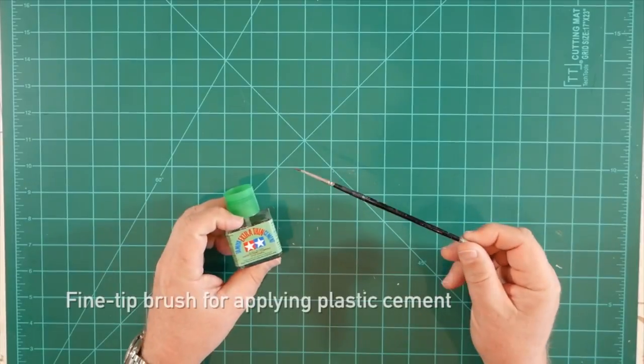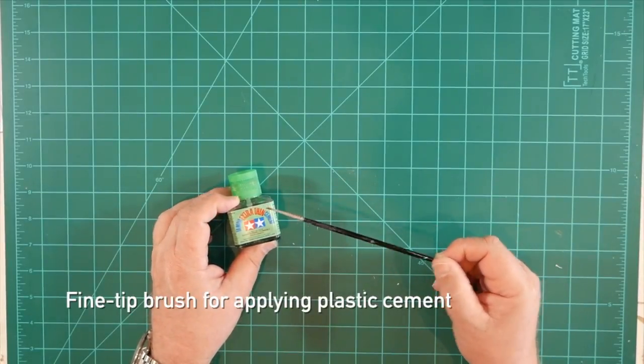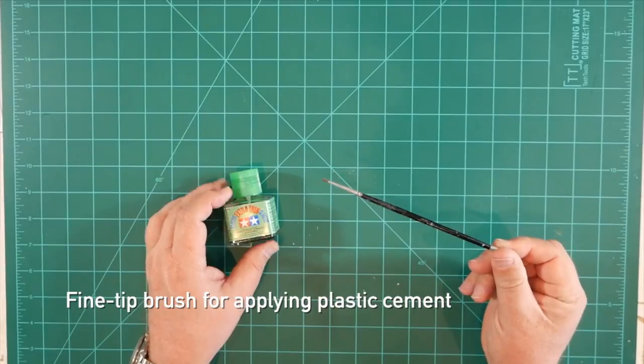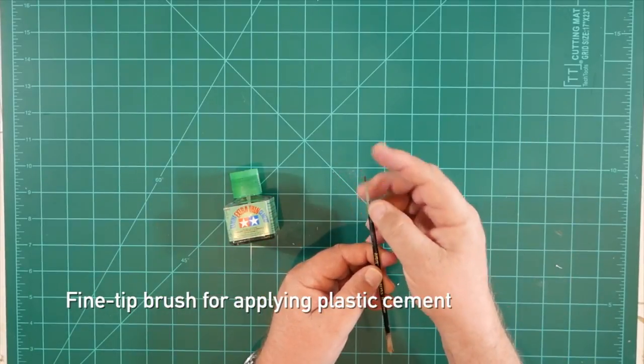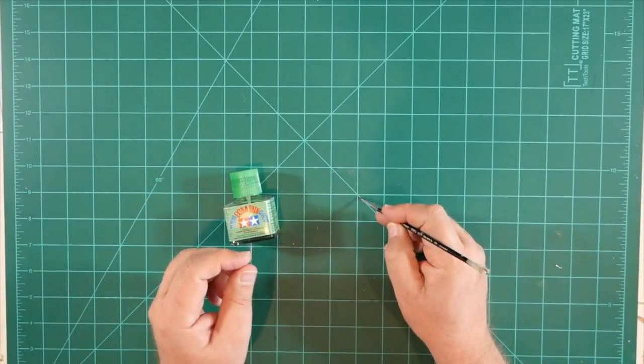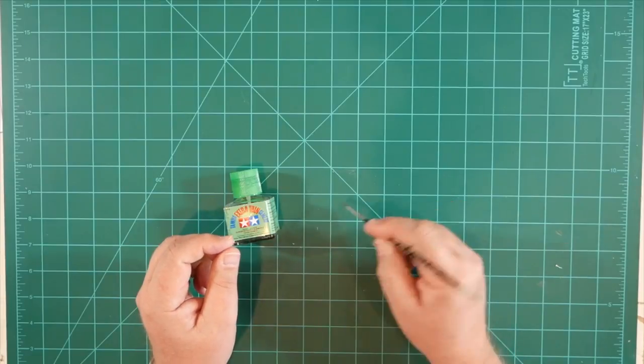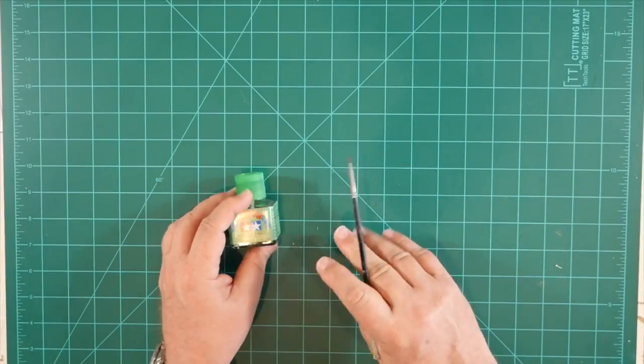Now for detailed application of the thin cement, I like to have an old paintbrush on hand. This is an old fine point brush that's very helpful for applying adhesive to small parts on the model. Great to have on hand.